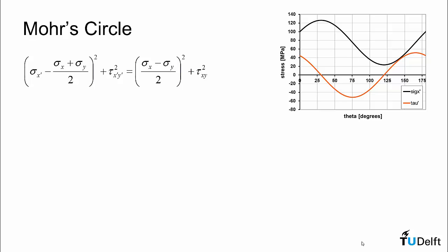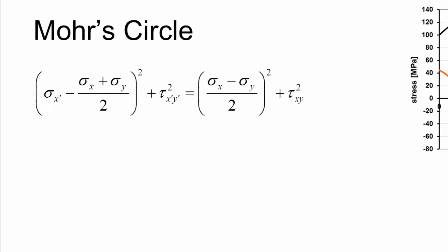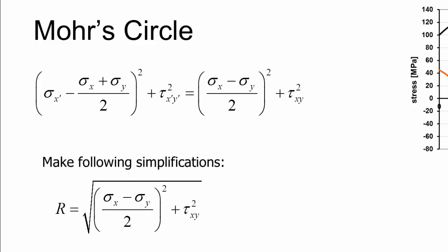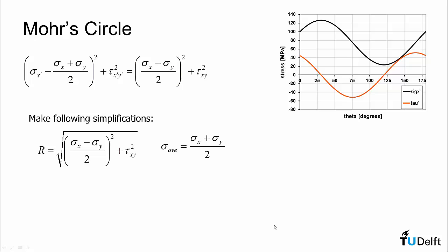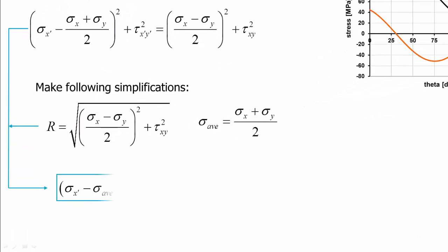Now if we take this equation for a circle, we can make a few more simplifications to it. We can recognize that everything on the right hand side here is the r, or the radius of the circle, squared. So we can define the radius as a square root of all the terms on the right hand side. We can also define what we will call the average normal stress, and that is just the normal stress in the original x direction plus the normal stress in the original y direction divided by 2.